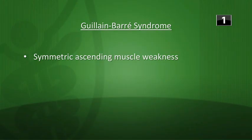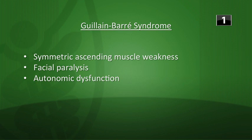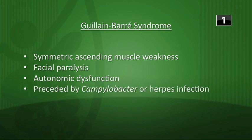Let's get warmed up for biochem 13. First question: what are the classic manifestations of Guillain-Barré syndrome? You see ascending muscle weakness starting in the lower extremities, symmetric muscle weakness, and there can be some facial paralysis. You can also see autonomic dysfunction like hyper- or hypotension or tachycardia. Guillain-Barré is often preceded by a Campylobacter infection or a herpes infection.